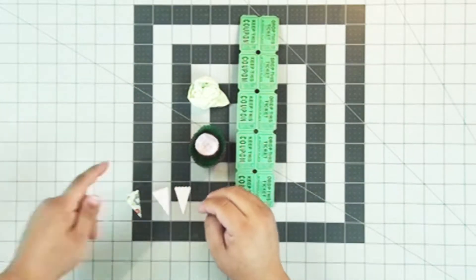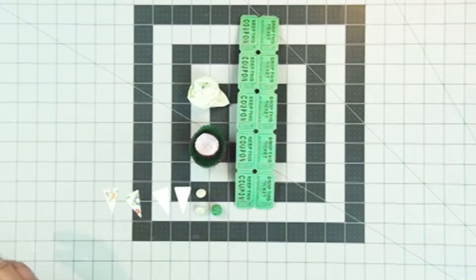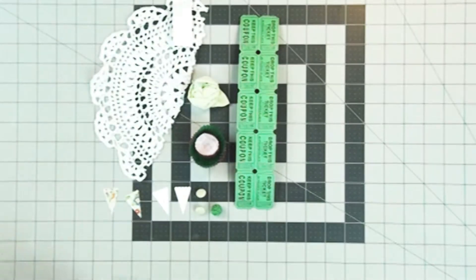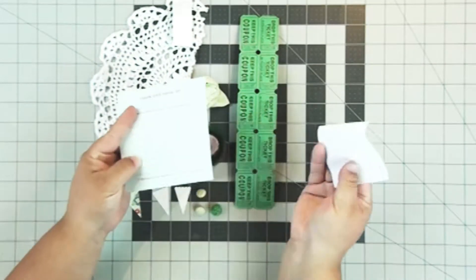Some little cupcake liners. Gingham flower tickets. Some gingham buttons that match the flowers. A crochet doily half.